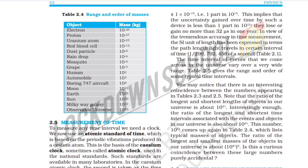This implies that the uncertainty gained over time by such a device is less than one part in 10¹⁵ — the loss or gain is no more than 3.2 microseconds in one year. In view of the tremendous accuracy in time measurement, the SI unit of length has been expressed in terms of the path length that light traverses in a certain interval of time: 1/299,792,458 of a second.